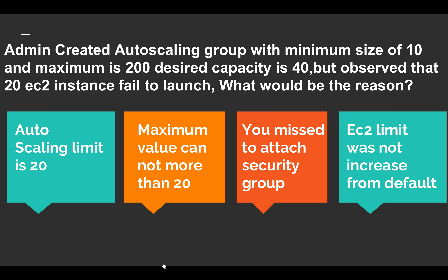The correct answer is the last option: EC2 limit was not increased from the default. By default, there is a limit of 20 EC2 instances per region. When configuring auto scaling, you must be aware of your resource limits. If you need more than the default limit, you should raise your EC2 instance limit with Amazon. That's why the instances failed to launch.